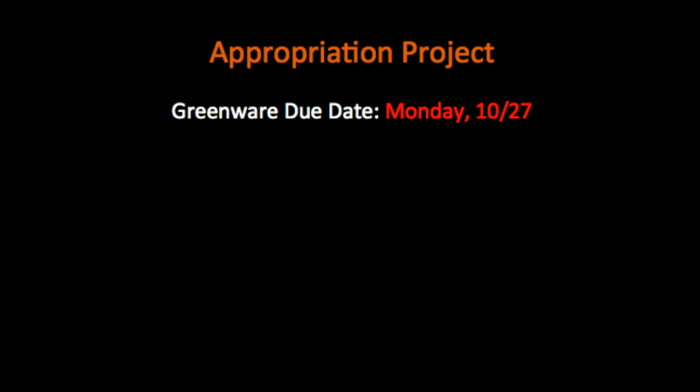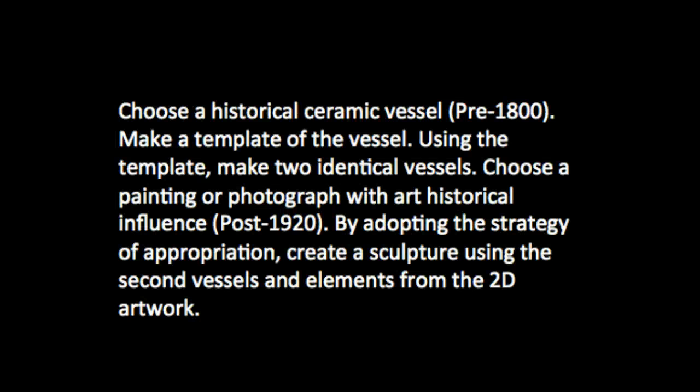Now let's talk about what you're going to be doing for this project. The appropriation project is due in the greenware stage on Monday, October 27th — this means it should be completed and ready to dry out. For this project, you will choose a historical ceramic vessel pre-1800, make a template of the vessel, and using the template, make two identical vessels. Then choose a painting or photograph with art historical influence post-1920, and by adopting the strategy of appropriation, create a sculpture using the second vessel and elements from the 2D artwork. The 2D artwork can be a painting, photograph, comic, or graffiti, as long as it has art historical importance. It cannot just be something that you or a friend has made.